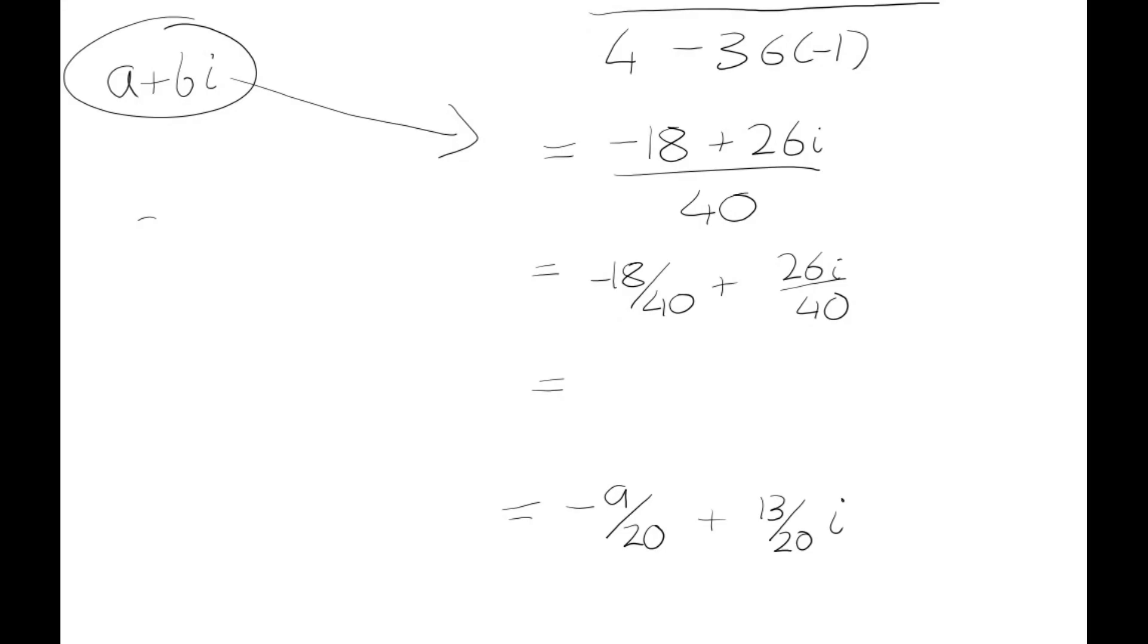In the Leaving Cert they might say give your answer in the form a + bi, or they might say this is a number, find a and find b. When you do your division you figure out that a is -9/20 and your b is 13/20. You'll have no problem finding loads of examples in your maths book and hopefully you should be able to do them all now.